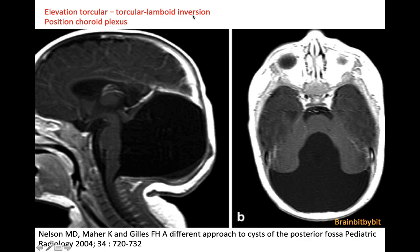On post-contrast images you can also look at the position of the choroid plexus, which is absent or displaced laterally in Dandy-Walker malformation.